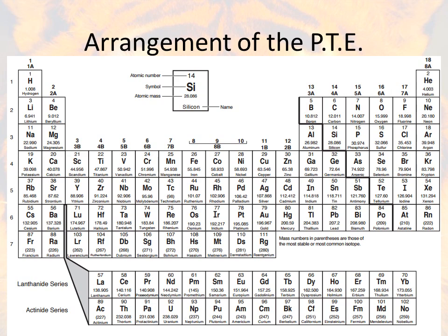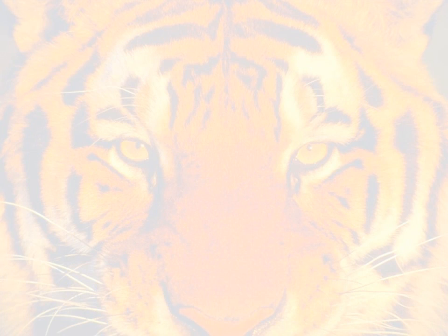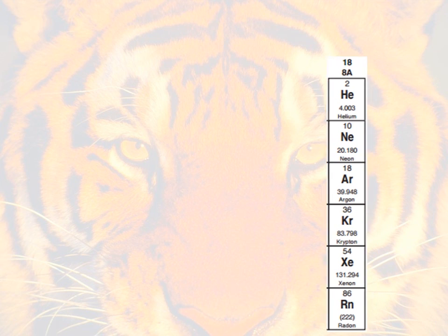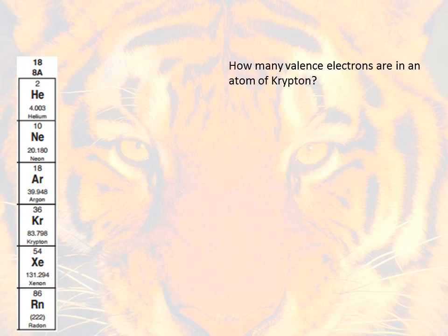Okay, let's look at another example for how these groups work. Let's go ahead and take group 8A. It's on the far right-hand side. Now as we look at these, let's just say we had a question on the test. How many valence electrons are there in an atom of krypton?